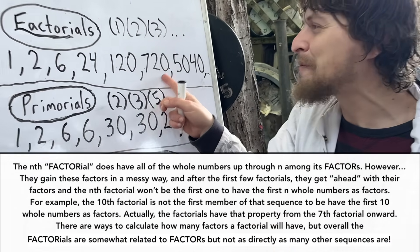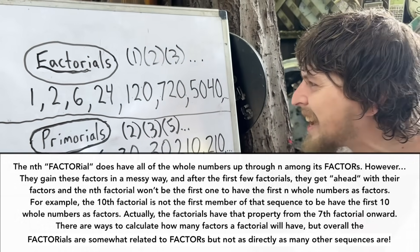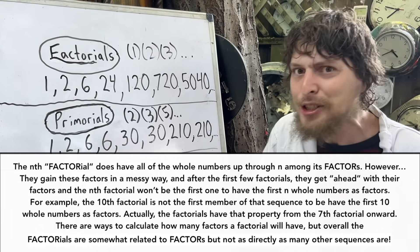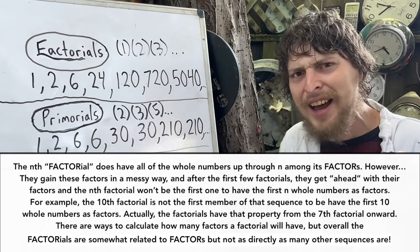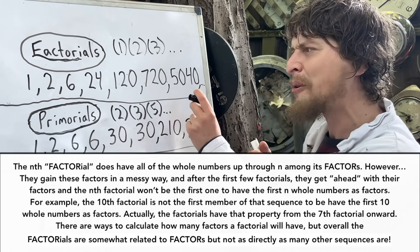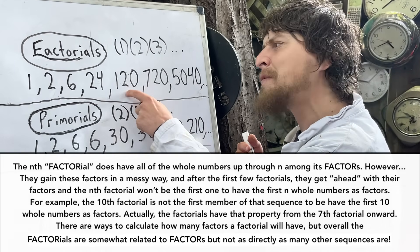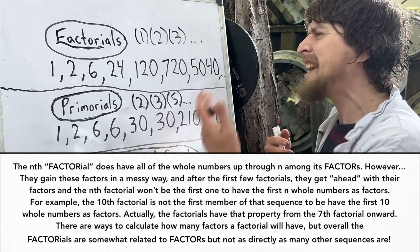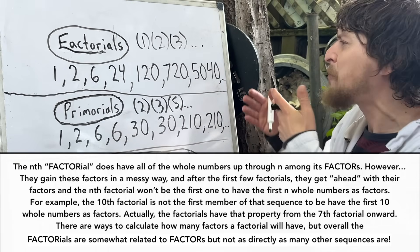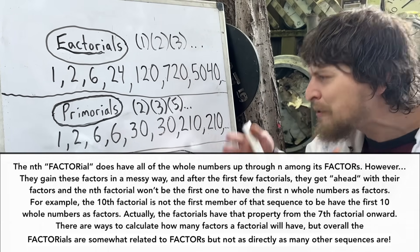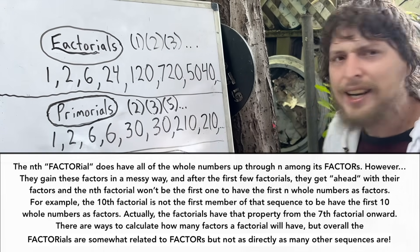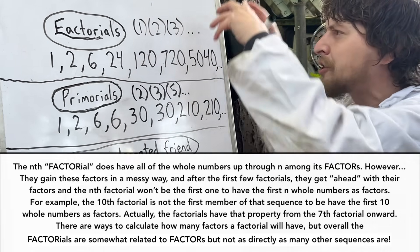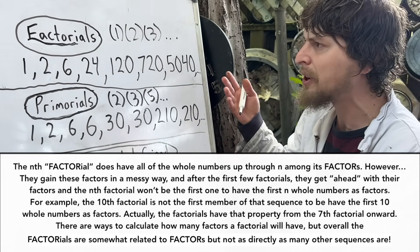However, that's not the first one that's divisible by 1 through 6. If we look at the number 120, that is also divisible by 1 through 6, and that's the 5th factorial. So the 5th factorial ends up getting a bit ahead, and then we don't really need 6 factorial if we were trying to have a number that was divisible by the first 6 numbers.